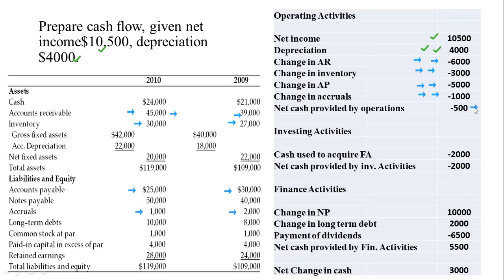The second section is investing activities. We invest in machines and equipment. Fixed assets increased from $40,000 to $42,000 — since assets increased, this represents an outflow. The total for investing activities is negative $2,000.